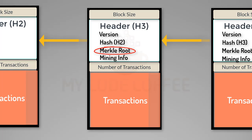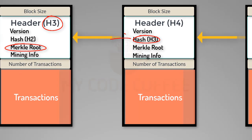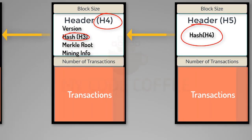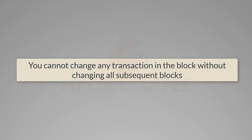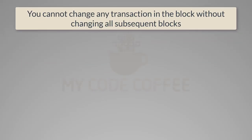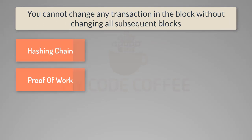So if we change any transaction, the Merkle Root will change, which means the header will change, which subsequently means that the hash of this header will change, which means the value storing the hash of the header of the previous block will change, meaning that header has changed and its hash has changed. Changing any transaction in a block creates a ripple effect — you cannot change any transaction in a block without changing all subsequent blocks. This is the first layer of defense of the blockchain system, along with the proof of work algorithm and consensus.